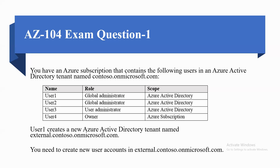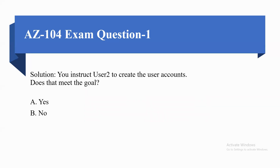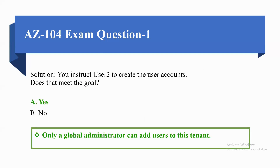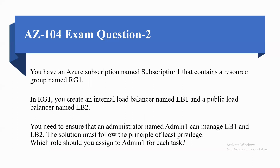User 1 creates a new Azure Active Directory tenant named external.contoso.onmicrosoft.com. You need to create a new user account in external.contoso.onmicrosoft.com. The proposed solution is to instruct User 2 to create the user account. Does this solution meet the goal? The correct answer is Yes, because only a Global Administrator can add users to this tenant.